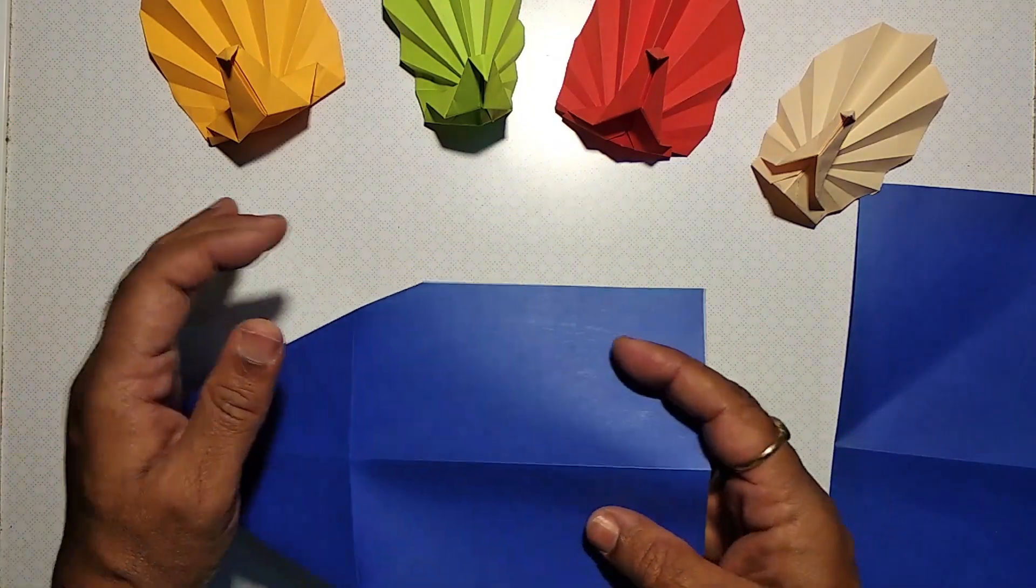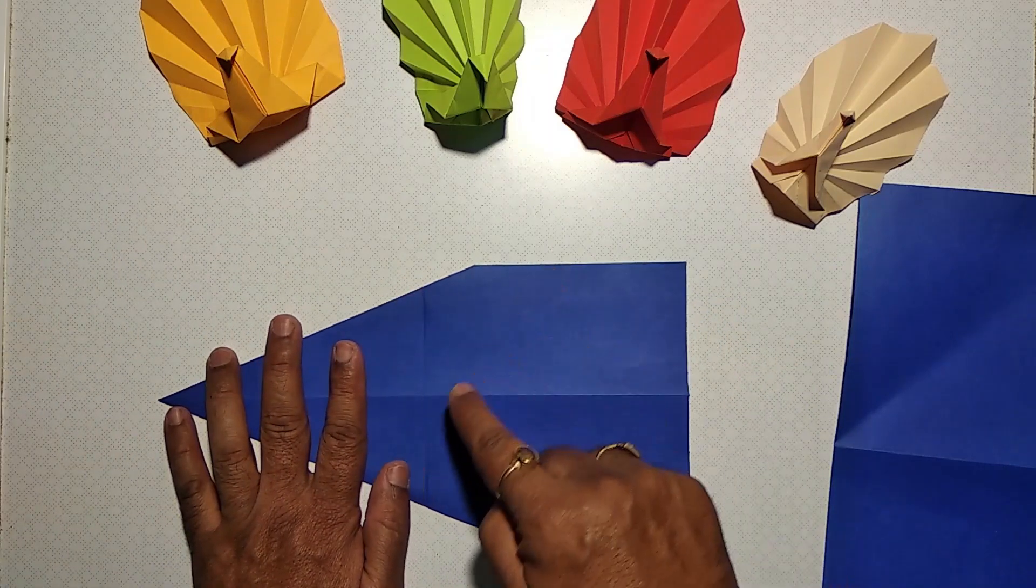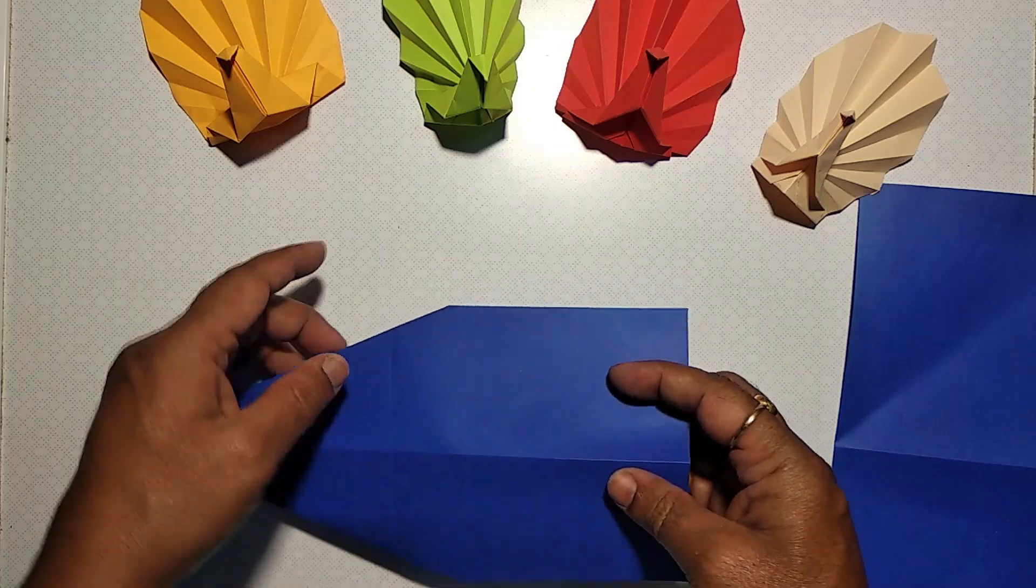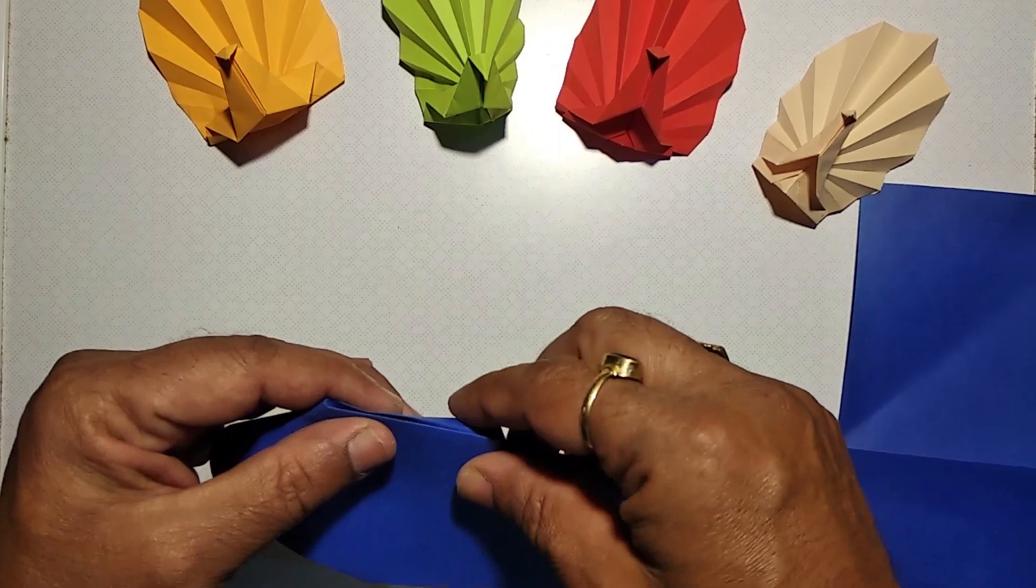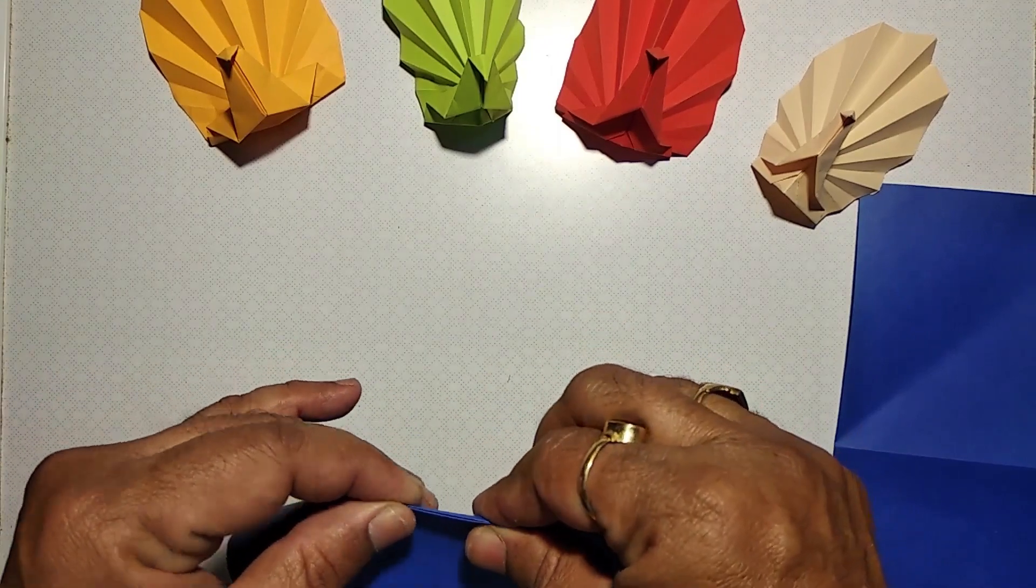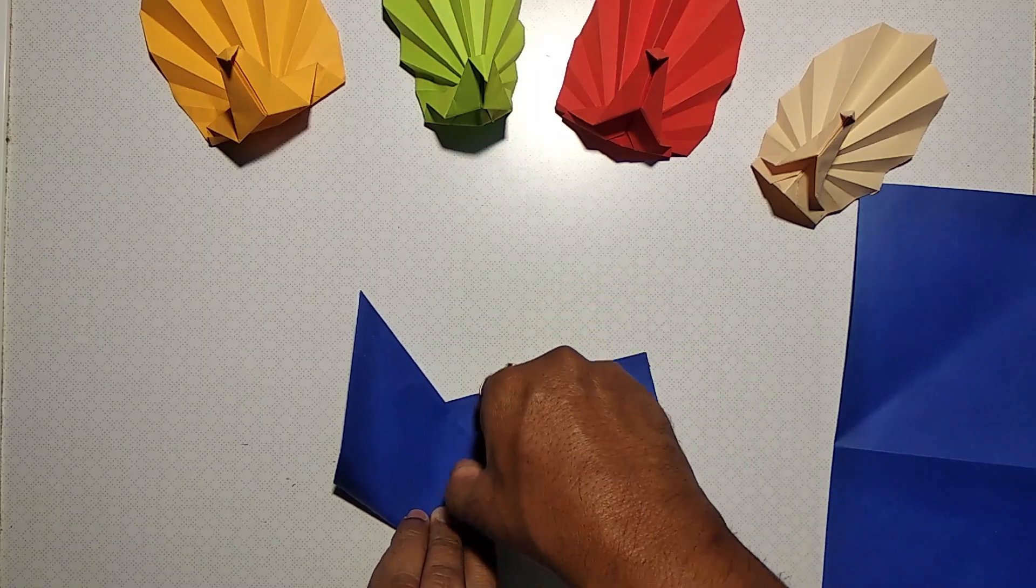We can identify two 90-degree angles. Bisect those angles in this way on the other side also.